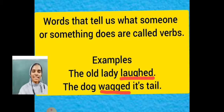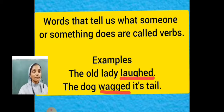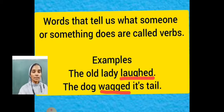Next one: the dog wagged its tail. Which is the subject here? The dog. The verb describes what the subject is doing. What did the dog do? The dog wagged its tail.